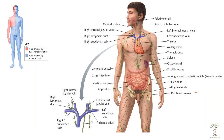First we have our bone marrow. The red bone marrow contains hematopoietic stem cells that will differentiate into either red blood cells or white blood cells.